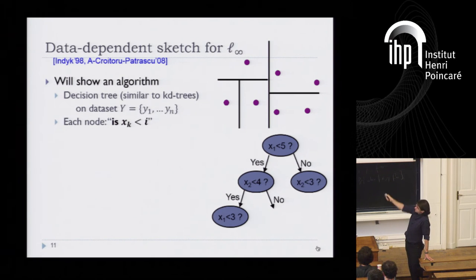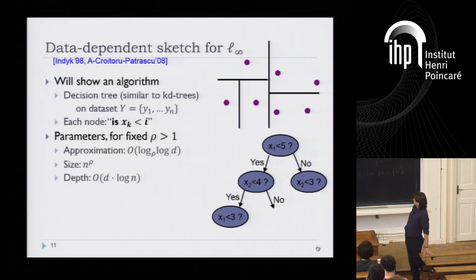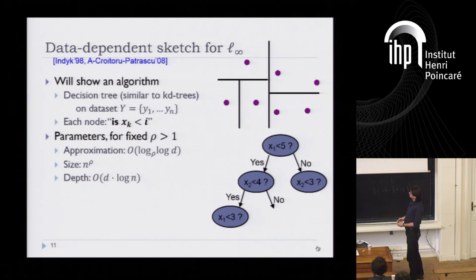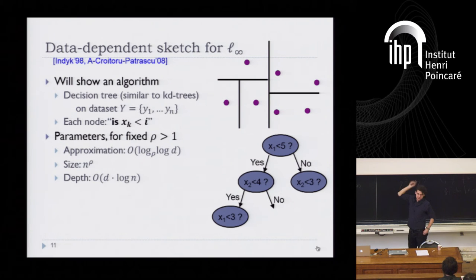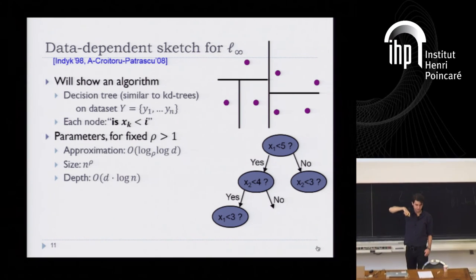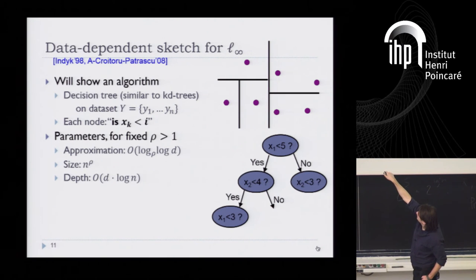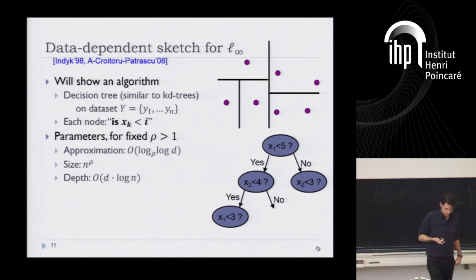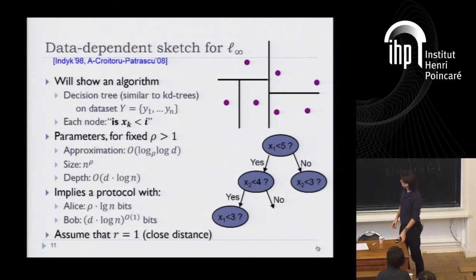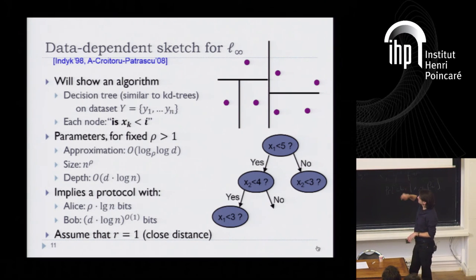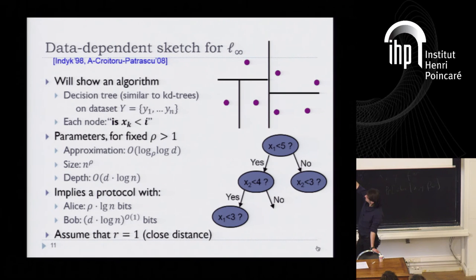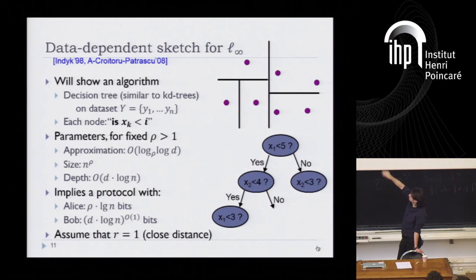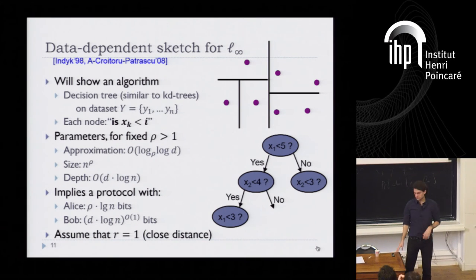What one can prove is that for fixed rho greater than one — say rho is 1.1 — you can get approximation which is doubly logarithmic in dimension, with a tree of size N to the power rho and depth something like D log N. Using standard reductions in communication complexity, this decision tree implies a protocol where Alice communicates rho times log N bits, and Bob communicates only d poly-log bits back — definitely sub-polynomial in N.